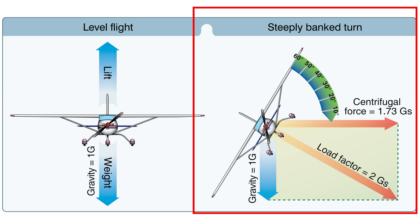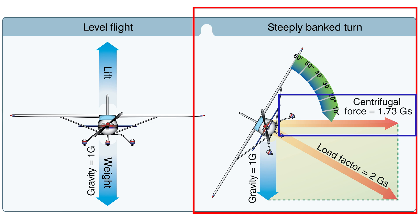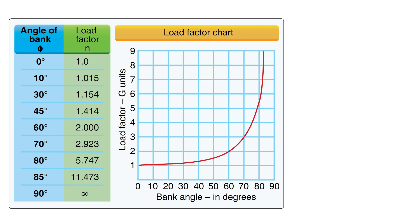In a coordinated turn of an aircraft at a constant altitude, the load factor is the result of two forces: the gravitational force of aircraft mass and centrifugal force. The gravitational force is equal to 1G, but the centrifugal force will change depending on the banking angle. A higher banking angle increases the centrifugal force. Load factor can change as a result of climb, turn, or descent, but turning or banking has the greatest effect on load factor. The load factor increases quickly if you turn your drone at an angle of 45 degrees or more.